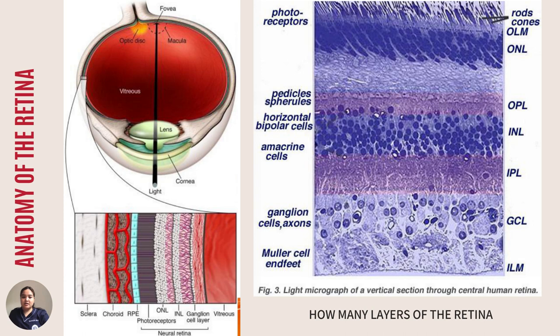The retina has 10 distinct layers: the inner limiting membrane, the nerve fiber layer (NFL), the ganglion cell layer, the inner plexiform layer, the inner nuclear layer, the middle limiting membrane, the outer plexiform layer, the outer nuclear layer, the external limiting membrane, and the layer of rods and cones. We have a picture of the light micrograph of a vertical section through a central human retina showing the 10 layers of the retina.